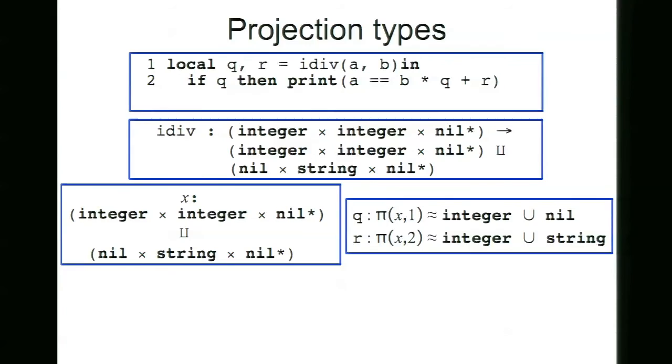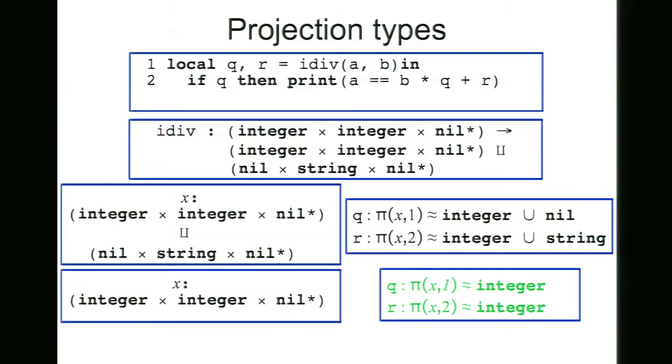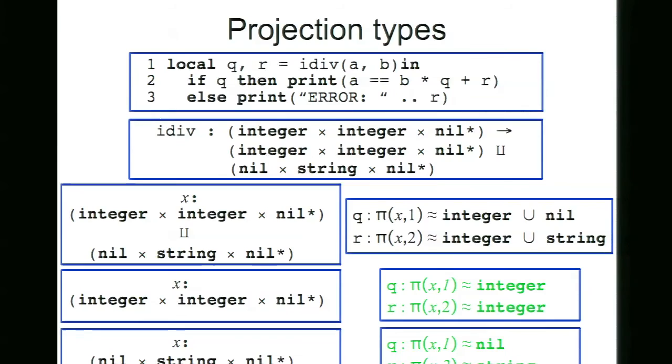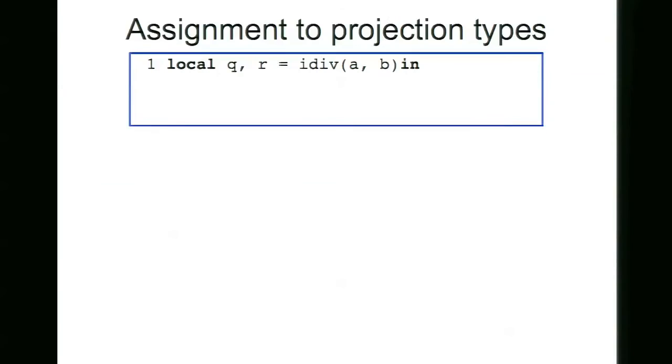Then, when we use an if statement to constrain the type of Q, actually we are changing the union and not the types of Q and R. So this creates a dependency relation between the types of Q and R. And this means that inside the if we constrain the union type to have just the first part of the union, containing just integers. And this means that Q and R both are integers. And in the else part of this if, R is of type string because now the union type is constrained just to the second part that contains nil and string. Projection types also cannot appear inside any other types and they can be bound only to local variables. We also prevent assignments to projection types because assignment to these projection types could break the dependency relation that exists between them.